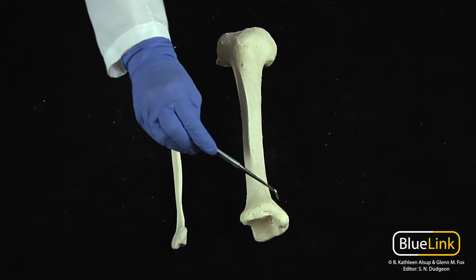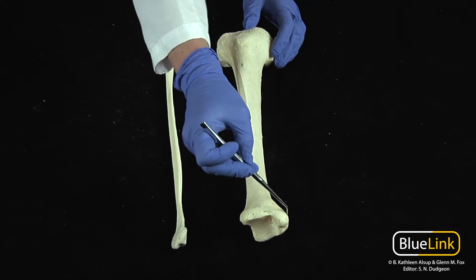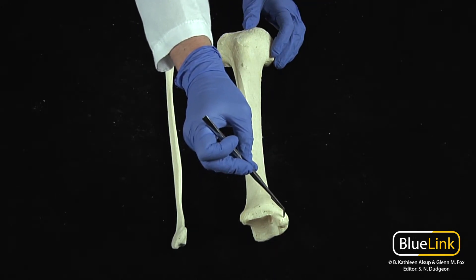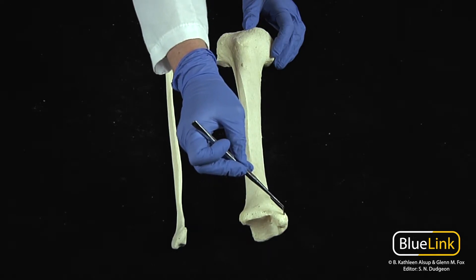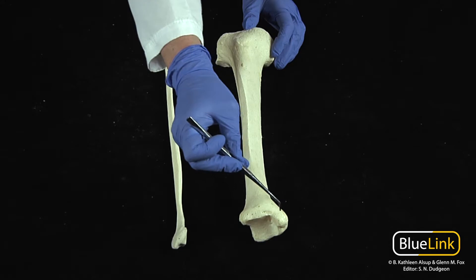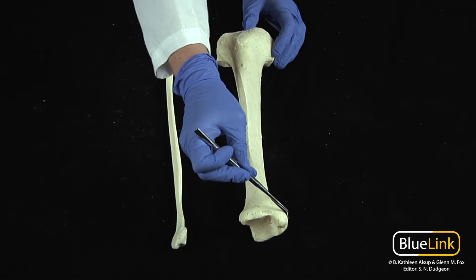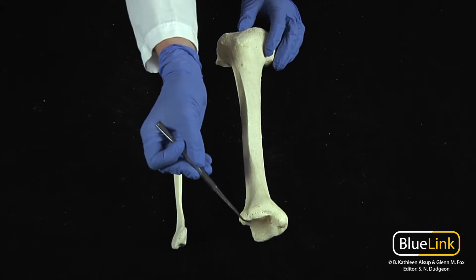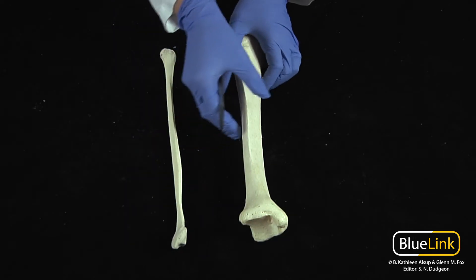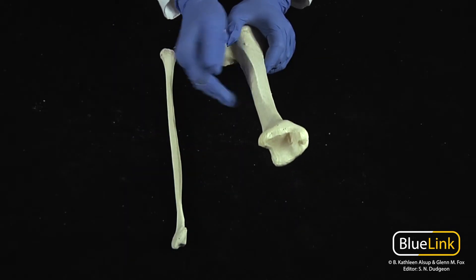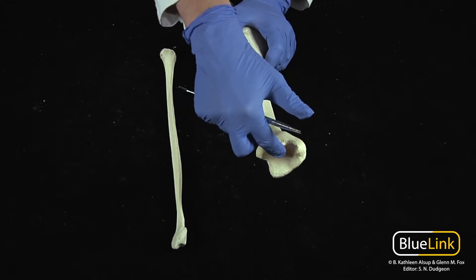Now if you move distally, there are two prominent things I want you to notice here. You have this extension or projection of bone that's going to extend distally. This is your medial malleolus, which is going to form the bony prominence of the medial side of your ankle. This is going to articulate with the talus, which is one of your tarsal bones. And you can see here on the very distal end of this bone, this whole smooth surface — the tibia will basically sit on top of your talus.